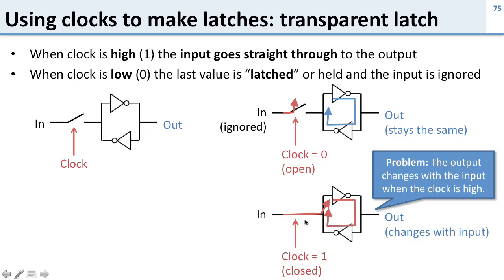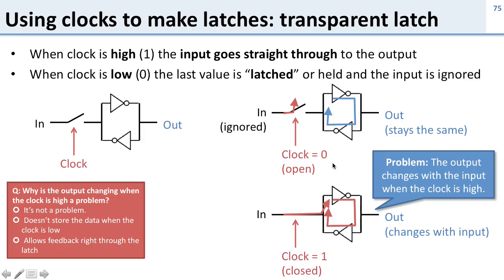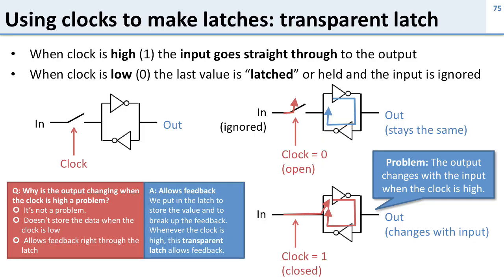But there's a problem: the value always changes when the clock is high. So we could still have a feedback loop — whenever the clock is high we'd have feedback. All we did was prevent feedback when the clock was low. Why is the output changing when the clock is high a problem? It allows the same feedback issues we had before. Think about a counter — we need to make sure the value doesn't feed back, but with this circuit it feeds back whenever the clock is high.